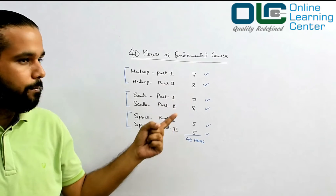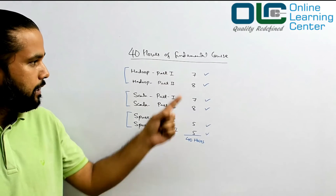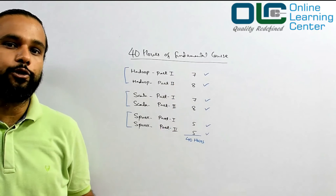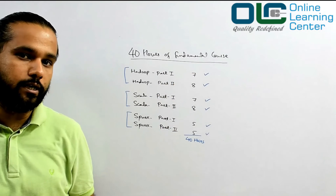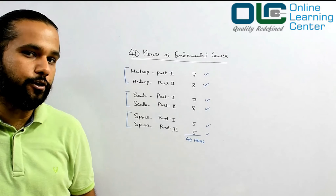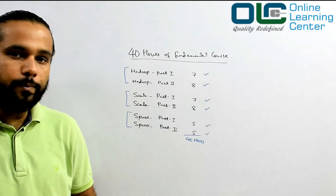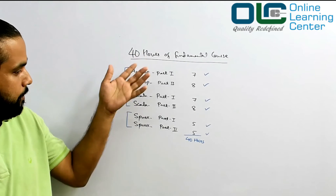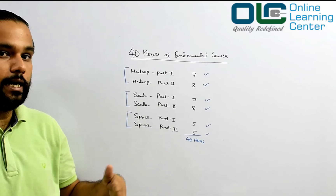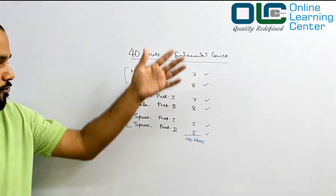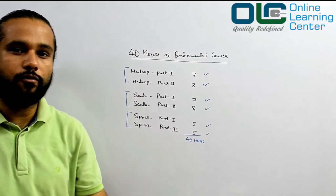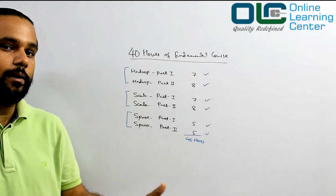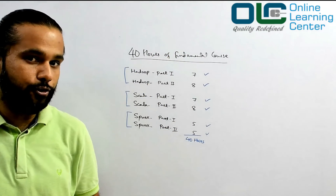We don't want to give you 40 hours all at once when you're not even using it — that doesn't make sense. So it's a step-by-step approach. Every module you complete, you get one certificate, produce that, and you'll get access to the next module. And once you finish the full 40-hour program successfully, we have another program for you as well.